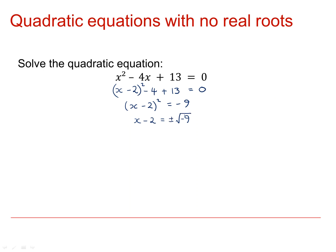However, we're going to plow on regardless. We can rearrange the square root of minus 9 using the normal rules of surds to get plus or minus the square root of 9 times the square root of minus 1. And get x minus 2 equals plus or minus 3 times the square root of minus 1.